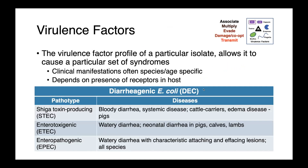E. coli are commonly divided into pathotypes, which are defined based on the set of virulence factors that a particular isolate possesses, allowing it to cause a particular set of syndromes. Oftentimes, the clinical manifestations of an E. coli infection are species- or age-specific. Some strains may be non-pathogenic — they may colonize certain hosts while causing very serious disease in others. We can very broadly divide E. coli into those which are diarrheogenic versus those which are extra-intestinal pathogenic, or ExPACs.